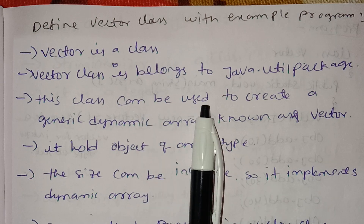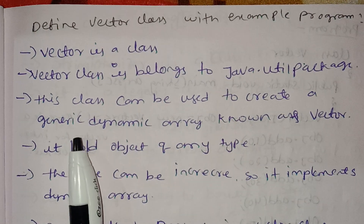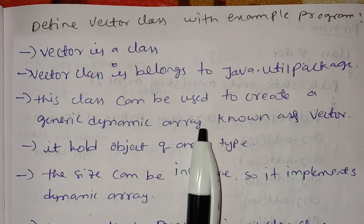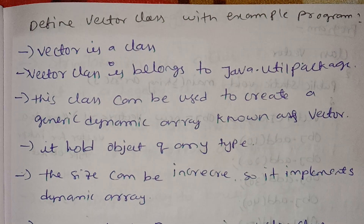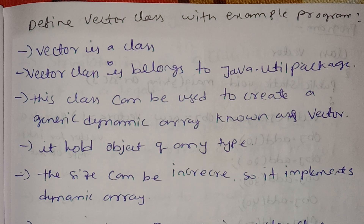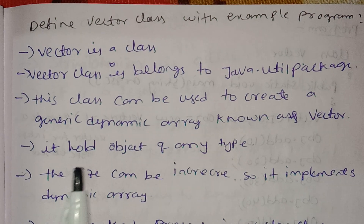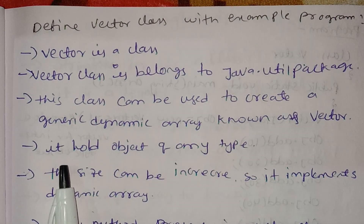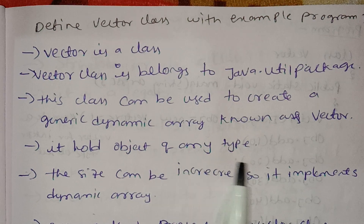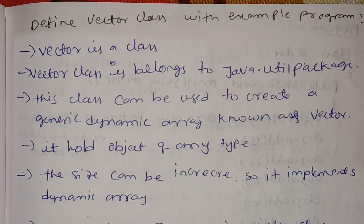This class can be used to create a generic dynamic array known as a Vector. The dynamic array works similar to ArrayList. It holds objects of any type — any data type.